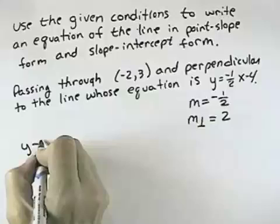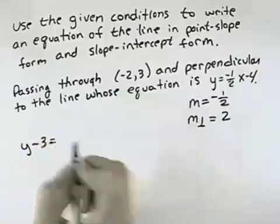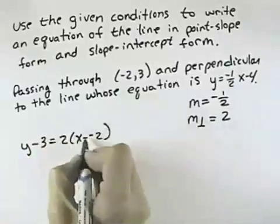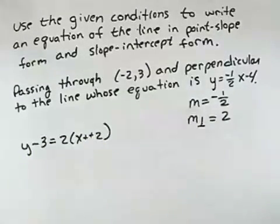So what we have, then, is y minus the y value of our point equals the slope times x minus the x value of the point, where x minus negative 2 becomes plus 2. And that would be the equation in point-slope form.